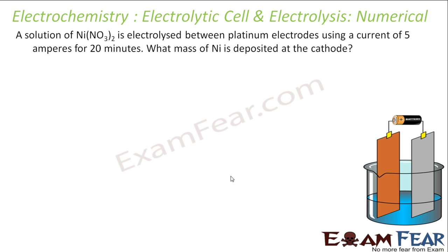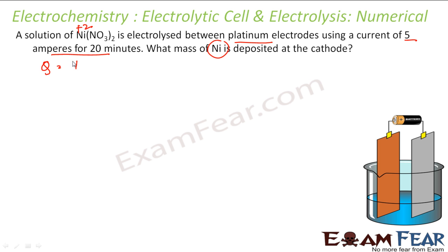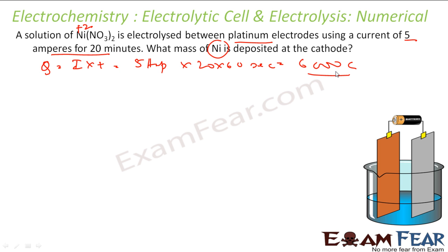A solution of Ni(NO₃)₂ (Ni²⁺) is electrolyzed between platinum electrodes using a current of 5 ampere for 20 minutes. How much Ni is deposited? Q = I × T = 5 × (20 × 60) = 6000 coulombs.